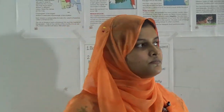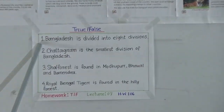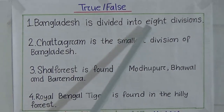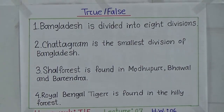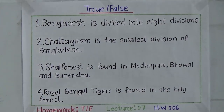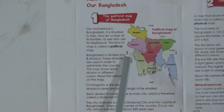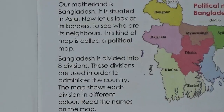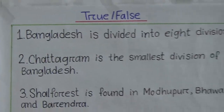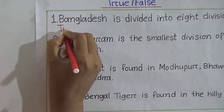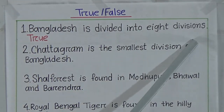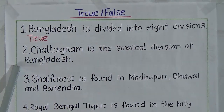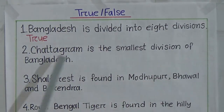Now we will do some true/false from this chapter. Number one: Bangladesh is divided into eight divisions — is it true or false? From Lesson 1 we find that Bangladesh is divided into eight divisions, so the statement is true.